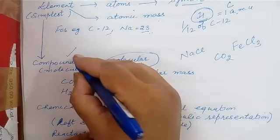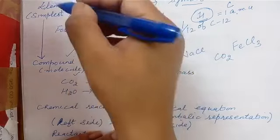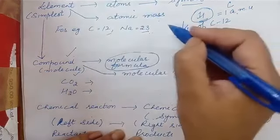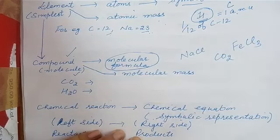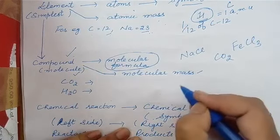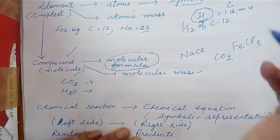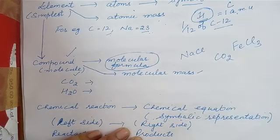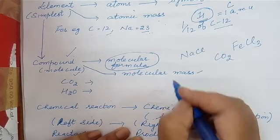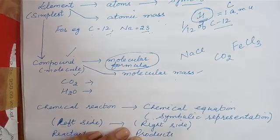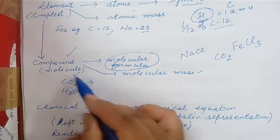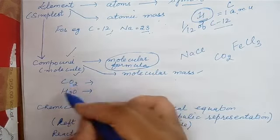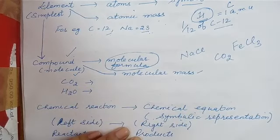Now just as elements have atomic masses, compounds have molecular masses. What is molecular mass? Molecular mass is again compared with the hydrogen atom or carbon-12. It is the total mass of all the atoms present in one molecule of that compound.